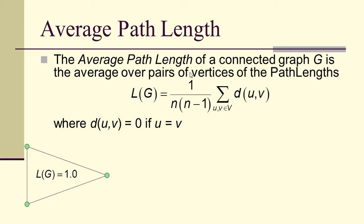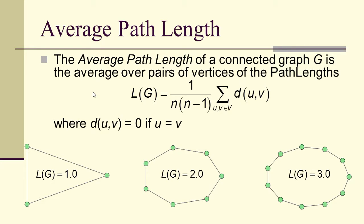Now suppose we have a triangle. The average path length of a triangle is 1, because all the paths that you get are repeated. The average path length of this cycle on 1, 2, 3, 4, 5, 6, 7, the average path length is 2. And then on this longer cycle, the average path length is 3. So again, there's actually a formula you can write down for the average path length of a cycle.